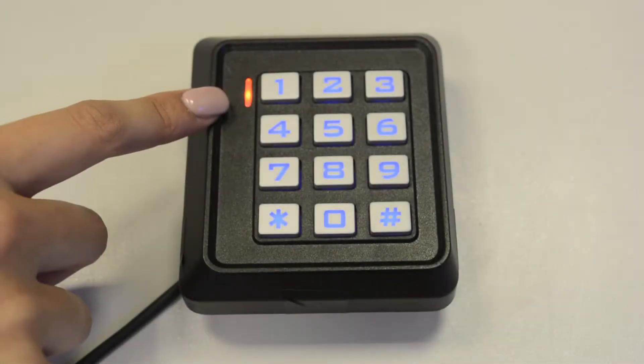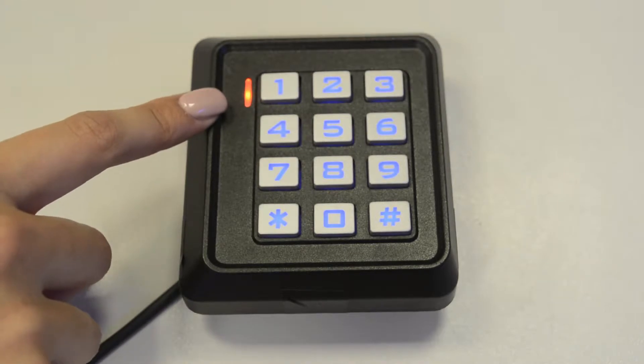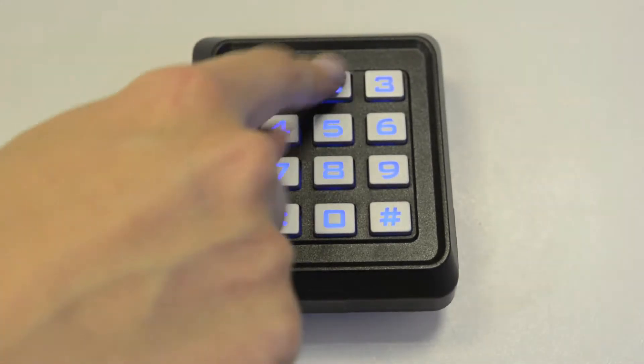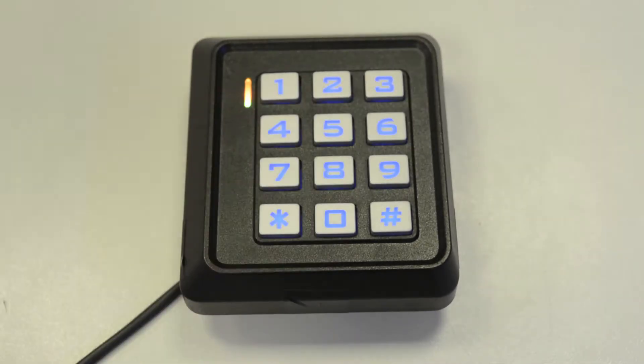The solid red LED will confirm you've entered programming mode. Now press 0 and enter your new master code. It should be around 6 to 8 digits long. So I'm going to enter 123456 to keep it nice and simple, followed by the hash key.